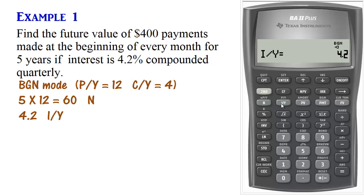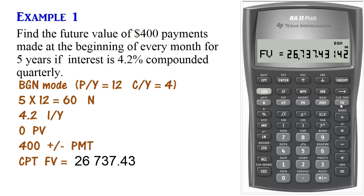We don't have present value, so we set that to 0, 0 present value. Payments are $400 payments. So $400, this is an outlay. Payments are being made, so we make that negative payment. And then we'll compute Future Value. So the Future Value is $26,737.43.